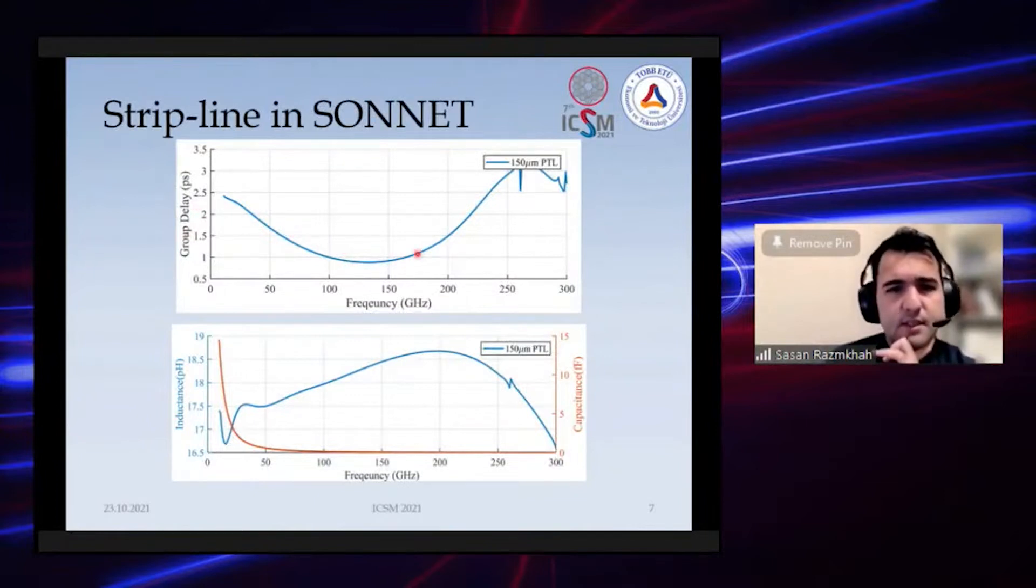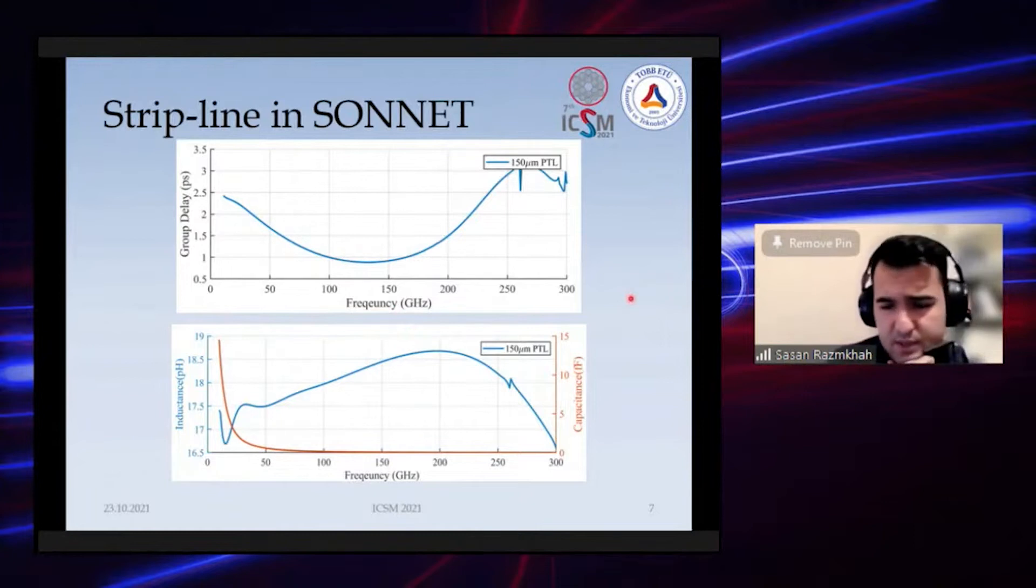This is the 150 micrometer strip line we modeled in the electromagnetic simulation software Sonnet. As you see, the impedance of superconductor and the group delay is very dependent on frequency, so when modeling a pulse for digital circuits we should consider this when sending the pulse for longer distances.